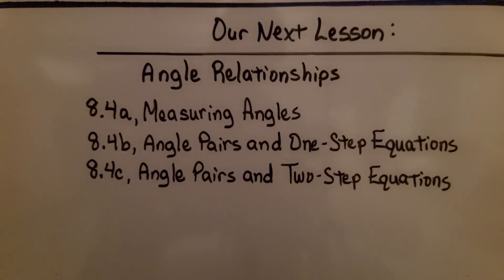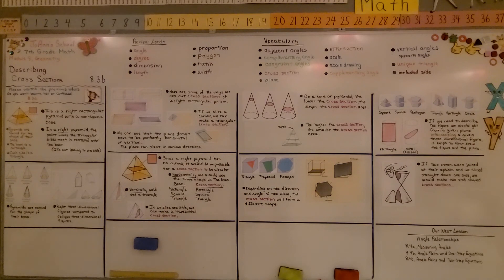We're finished with 8.3. We're going to move on to 8.4 about angle relationships. 8.4a is measuring angles. So we're going to need our protractors. As you're trying to find cross sections, use your imagination. Try to picture in your head what the cross section would look like. Try to imagine it. Have a great day and please join me for our next lesson. Bye!